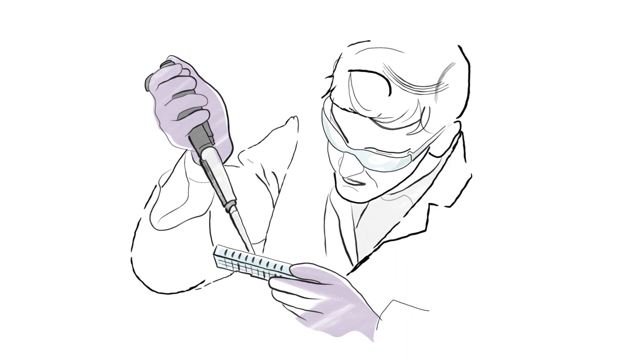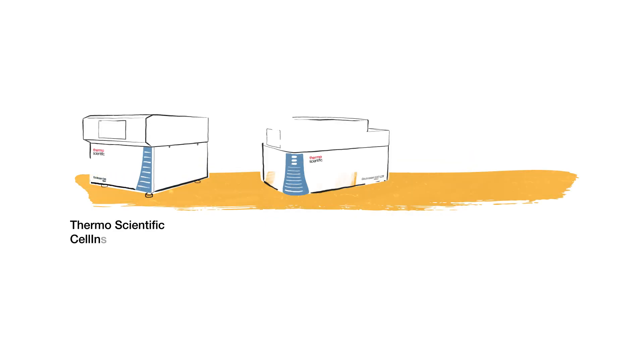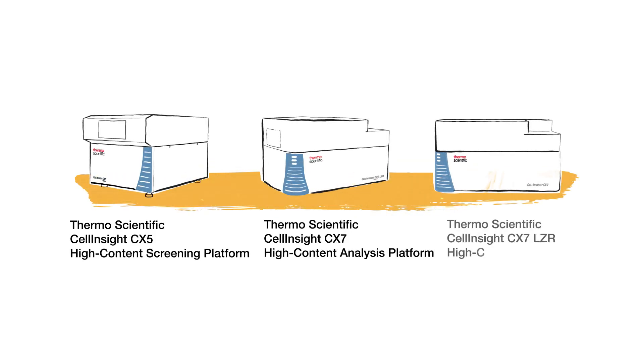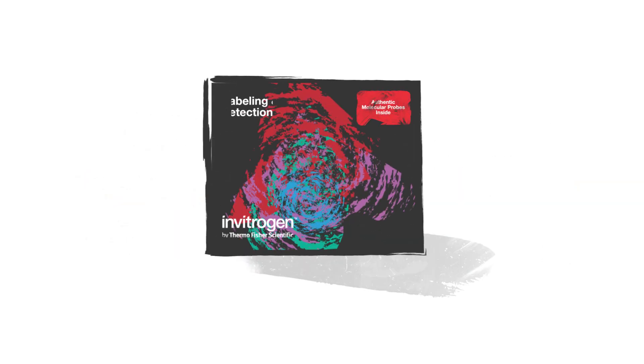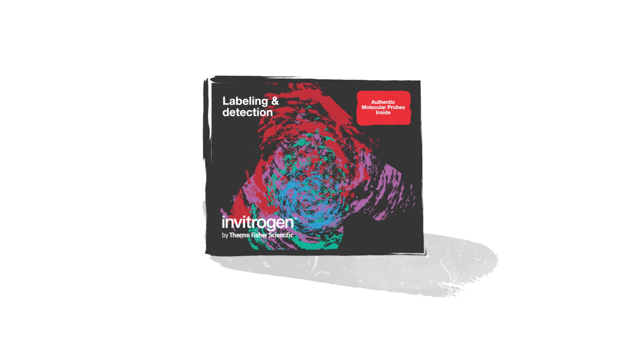Phototoxicity. Fluorescent stains and their required excitation wavelengths are typically detrimental to cell health. For reduced phototoxicity, consider using platforms capable of detecting fluorescent proteins such as GFP or RFP. Systems that have excitation capabilities at 740 nanometers and above are also recommended. Fluorescent proteins and higher excitation wavelengths tend to be less damaging to cells over long periods than wavelengths in the UV range.